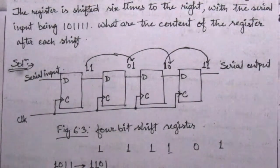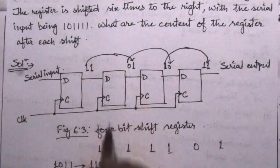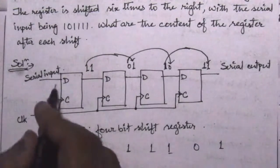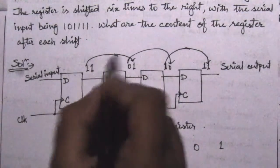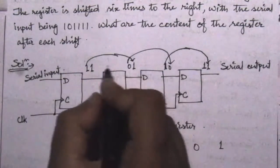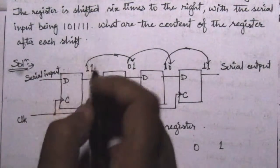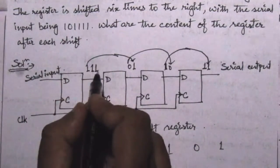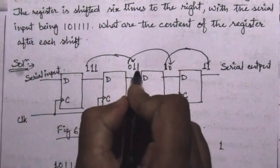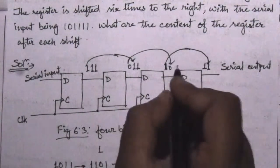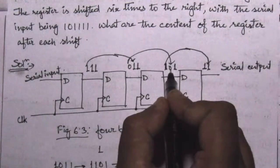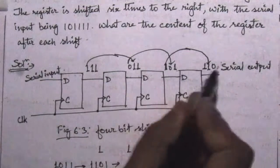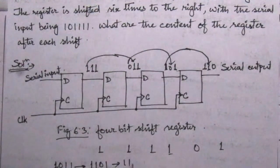The next serial input is also 1. After this second clock cycle, each bit shifts right again. The content of the register becomes 1110.